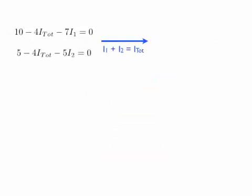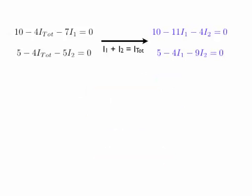So I have my two loop equations. I want to write everything in terms of I1 and I2, so I'm going to replace I-total with I1 plus I2 in each equation. Now I have two equations and two unknowns: I1 and I2. To eliminate I2, I'll multiply the first equation by 9 and the second equation by negative 4, then add them together. When I do that I get 70 minus 83·I1 equals 0, with the I2 terms cancelling out. Solving this gives I1 equals positive 0.843 amps.